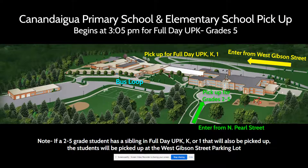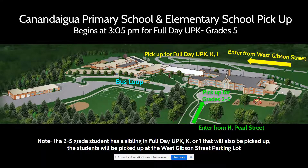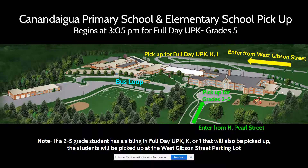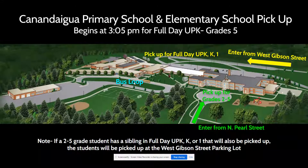Our pickup process this year: for people picking up students in full day UPK, K, or 1st grade, along with siblings of those students, you're going to enter from West Gibson Street and follow the traffic pattern. If you're picking up students in grades 2 through 5 who do not have a sibling in those other grades, you're going to enter from North Pearl Street into the lollipop area of the elementary school. Students who ride the bus and half-day UPK students are picked up at the bus loop.